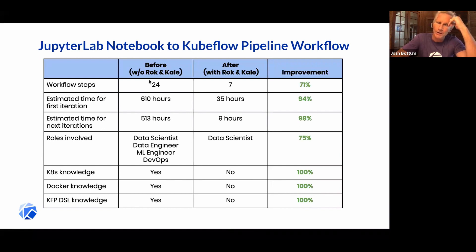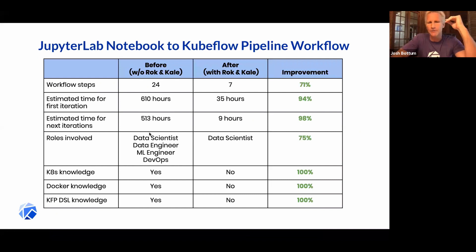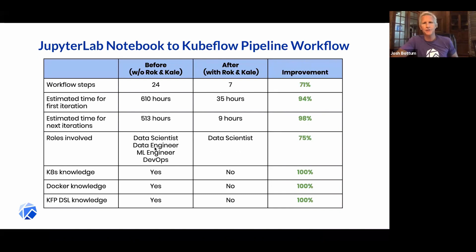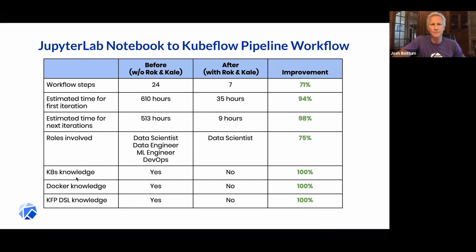Before this workflow with Rock and Kegel, it might take you 24 steps to build this model, potentially hundreds of hours in the first iteration, hundreds of hours in the second iteration, and really involve having a data scientist, data engineers, ML engineers, and DevOps people. Once you build your code, you need to pass it off to an ML engineer who knows how to create a Docker container and run that in Kubernetes, as well as be able to run a pipelines DSL.